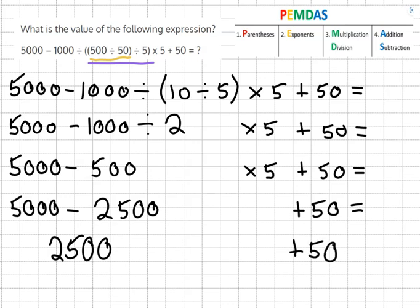And 2,500 plus 50 gives us our final answer of 2,550.